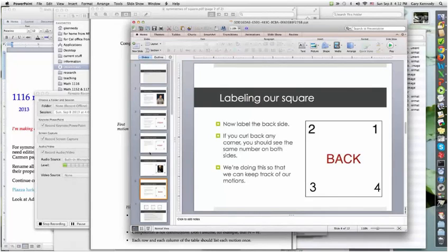The reason that we're putting these labels onto these corners is so that we can keep track of what we're doing to the square. The square itself is featureless, it actually is symmetric. So it's impossible to see whether we've done anything to it unless we actually mark it up in some way.